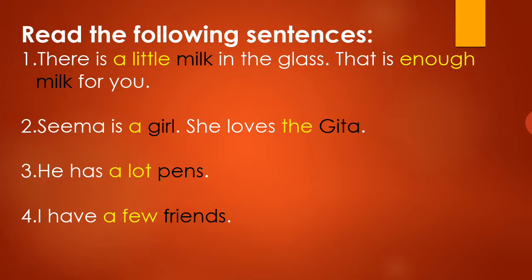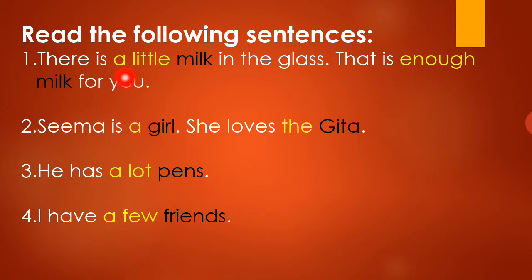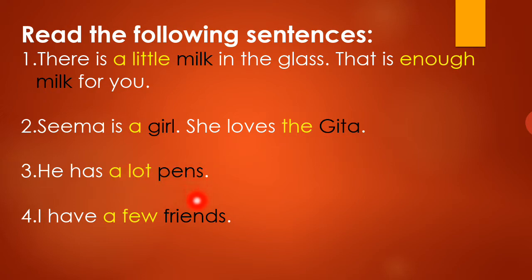Please look at these sentences carefully. 'There is a little milk in the glass.' 'That is enough milk for you.' 'Seema is a girl.' 'She loves the Gita.' 'He has allotments.' 'I have few friends.' In these sentences you can see the words written in yellow. Milk is a Noun, again milk is a Noun, girl is a Noun, Gita is a Noun, pen is a Noun, and friend is a Noun.